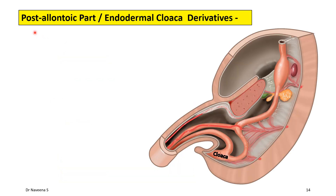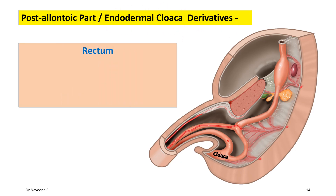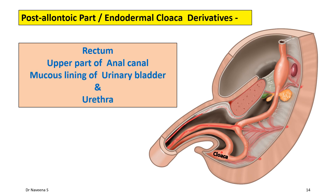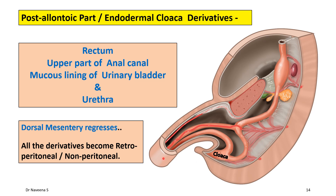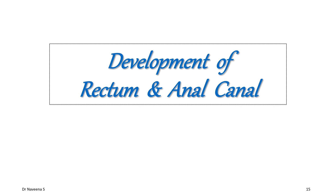Coming to the post-allantoic part derivatives, or endodermal cloaca derivatives: they are the rectum, upper part of the anal canal, and the mucous lining of the urinary bladder and urethra. The dorsal mesentery suspending the endodermal cloaca later on regresses, so that all the derivatives of the post-allantoic part become retroperitoneal or nonperitoneal. Now it is time to focus on the development of rectum and anal canal, which are the derivatives of the post-allantoic part of the hindgut.